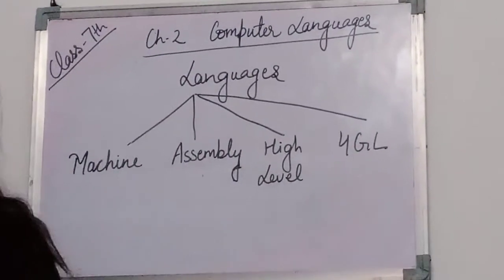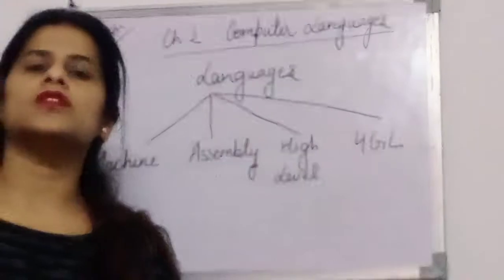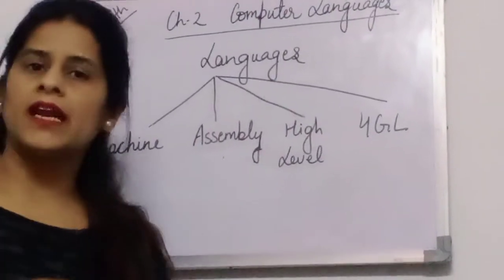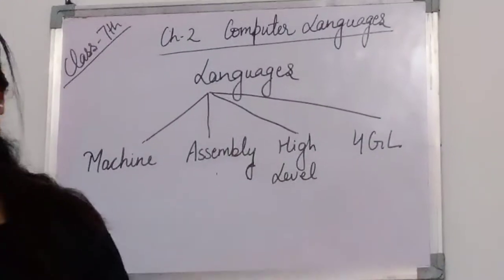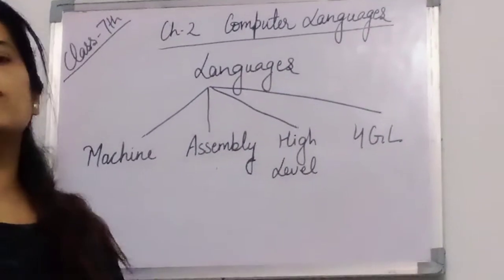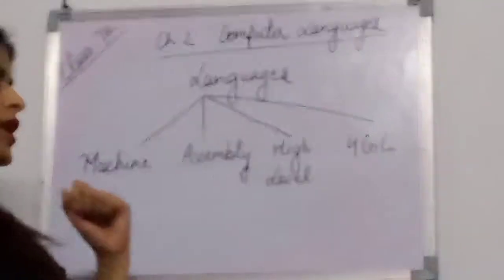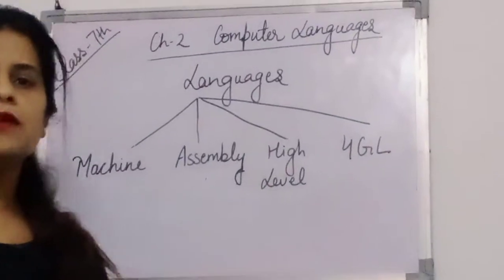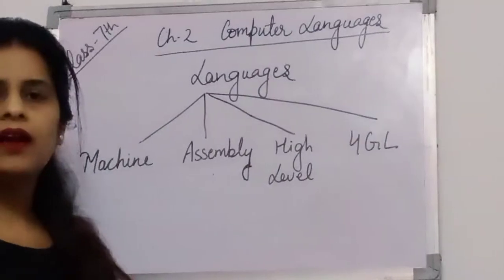Second is the assembly language. In assembly language we use mnemonic names — we use ADD for addition, SUB for subtraction, and MUL for multiplication. These are the mnemonic names, and this is also a machine dependent language.